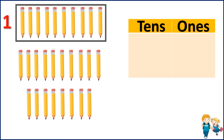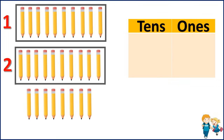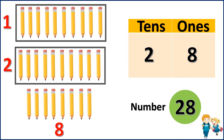Now let's count the next set: 1, 2, 3, 4, 5, 6, 7, 8, 9, 10. So this is 2 tens. Now let's count the remaining: 1, 2, 3, 4, 5, 6, 7, 8. So here we have 8 pencils. So in the 10s place we have 2 — that is 2 tens — and in the 1s place we have 8. So the number here is 28.